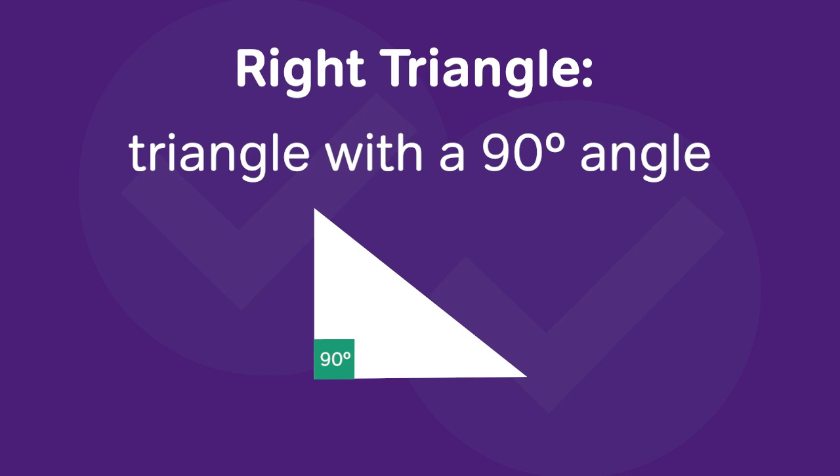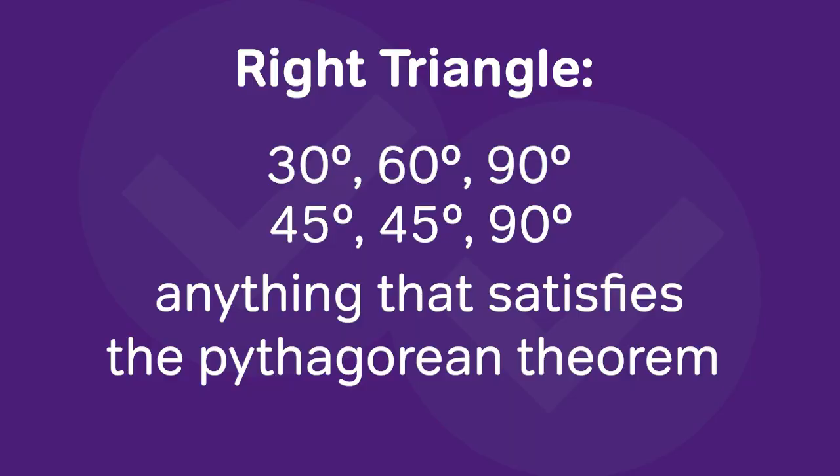so a right triangle is one that has a right angle, a 90 degree angle somewhere in that triangle, and there are some properties of certain types of right triangles that are often tested on the GMAT, so you want to pay attention to 30, 60, 90 degree right triangles, 45, 45, 90 degree right triangles, and then anything that satisfies the Pythagorean theorem in a special way is likely to show up on the exam.